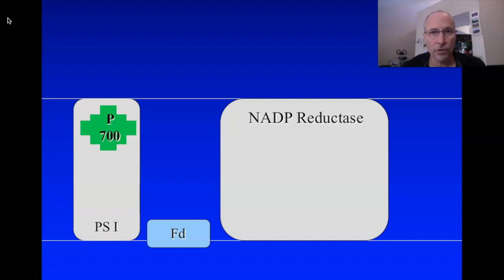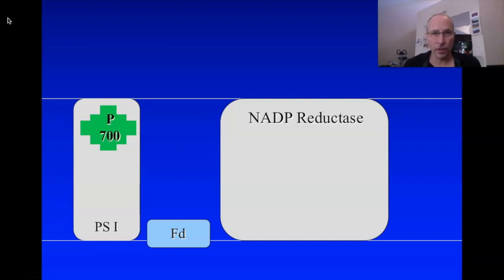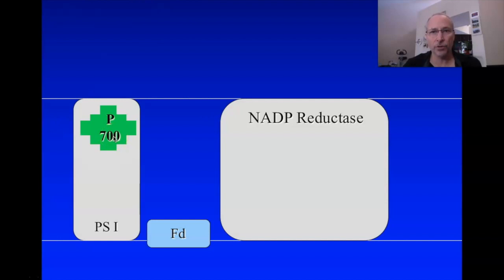Now on to the energy harvesting. We've seen how the photons are actually absorbed, but now how do we get that energy onto compounds like ATP and NADPH? The story begins with photosystem I. What happens in photosystem I is similar to photosystem II — it's going to be an electron transport chain, but the fate of the electrons is very different.